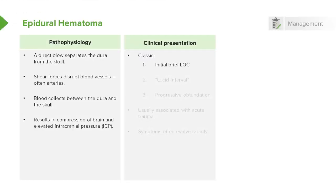The classic presentation of an epidural hematoma is an immediate period of loss of consciousness right after the blow to the head, followed by the patient waking up and having what's called a lucid interval — they'll wake up and be pretty much okay. However, they will progressively deteriorate over time and become more and more obtunded until they become comatose. Epidurals are almost always associated with acute trauma, and it takes a lot of force to produce this type of bleeding in the brain.